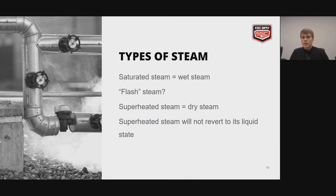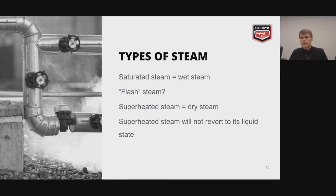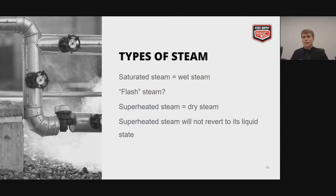Flash steam happens when there's a pressure drop. Under pressure, condensate can exist at higher temperatures than 212 degrees. So if you have condensate at 230 degrees at 10 psi and you bring it to atmosphere, a portion of that water would flash off into steam because water can only exist at atmospheric pressure at 212 degrees. Superheated steam is known as a dry steam — the steam is actually above the boiling point of water, having been heated after conversion into steam. This will not allow water droplets to form, and it will not revert to liquid state.